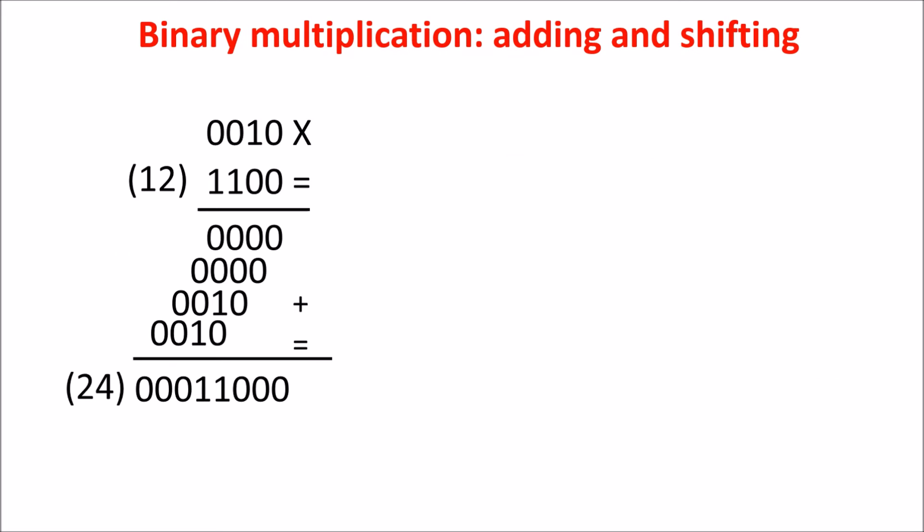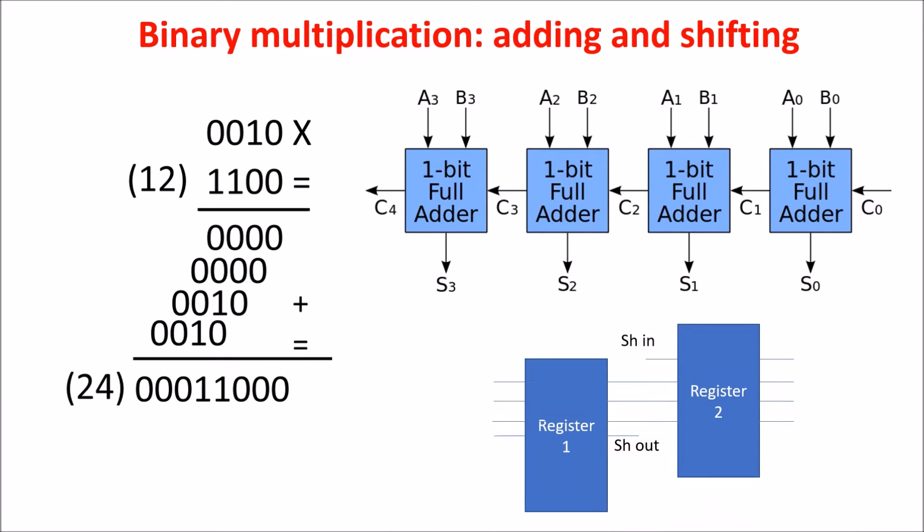A better way to do multiplication is using an adder and a shifter. You can see that the binary multiplication is equal to the decimal one, but when the digit in the multiplier is zero, you have only zero as partial product.